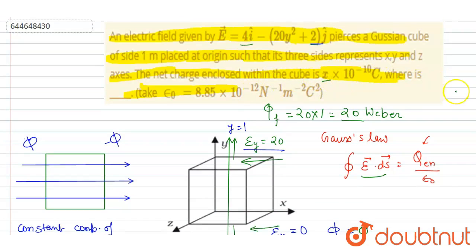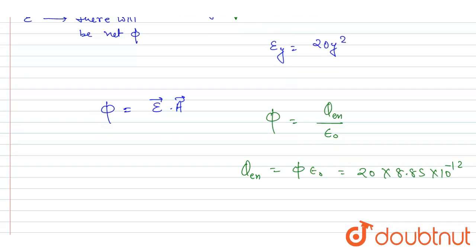If you see here, it is given in the question, and we want this x where x is the charge enclosed. So I will write, if you multiply 8.85 with 20, you will get it equals to 177.